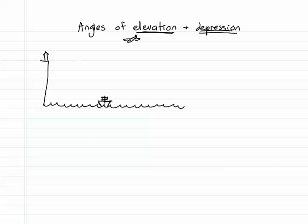Angles of elevation and depression are measured from a horizontal sight line. So here in the lighthouse on a cliff, looking straight out from the lighthouse is the horizontal sight line.